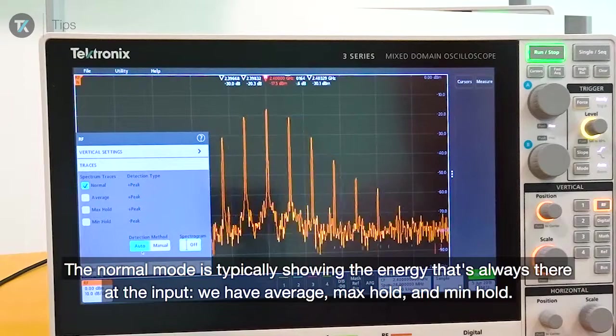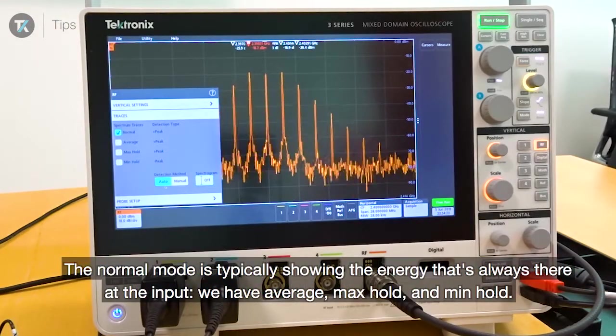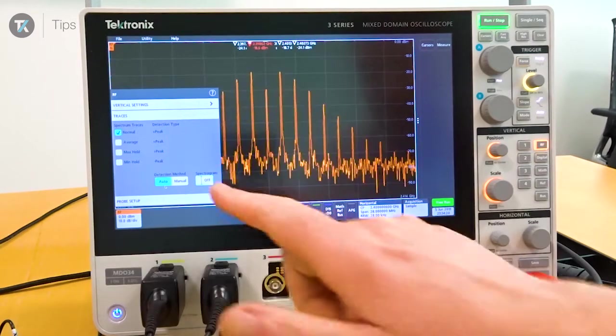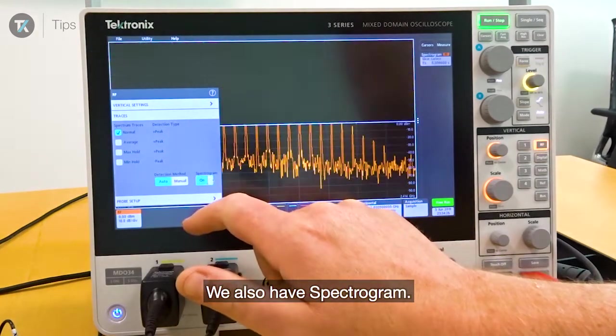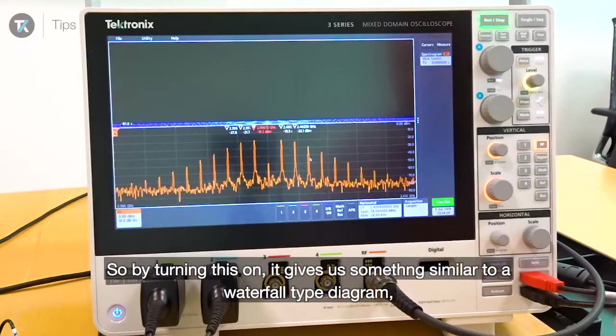The normal mode typically shows the energy that's always there at the input. We have average, max hold, min hold, and spectrogram. By turning this on, this gives us something similar to a waterfall type diagram.